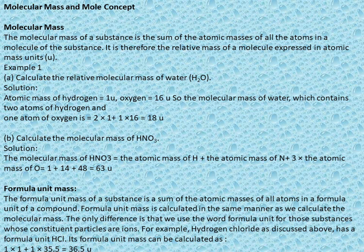For example, hydrogen chloride (HCl) has formula unit HCl. Its formula unit mass: 1 × 1 (H) + 1 × 35.5 (Cl) = 36.5u. So hydrochloric acid's formula unit mass is 36.5u.